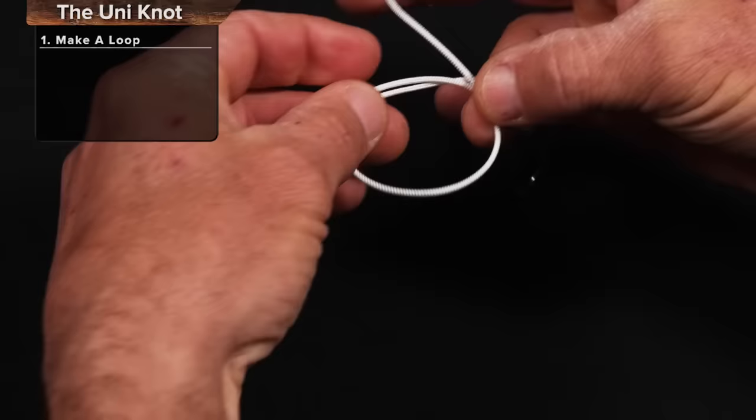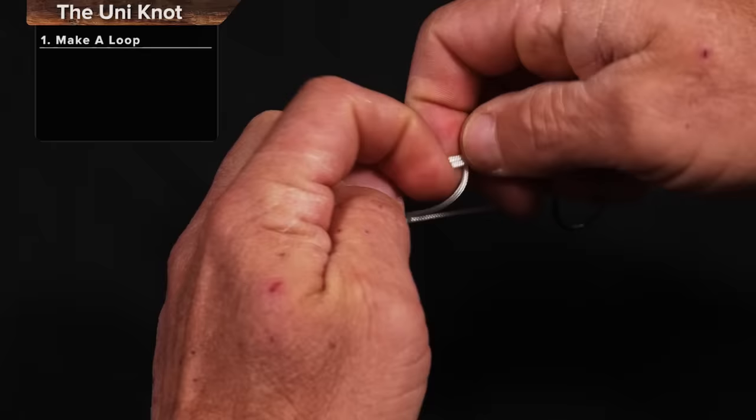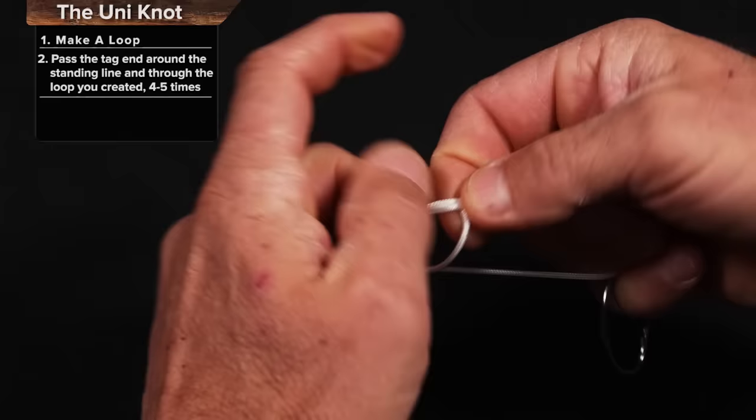Now, the easiest way to do it is to stretch this loop out just a little bit, and I'm going to wind the tag end one, two, three, four. We'll do it four in this deal, but a lot of times you'll do five or six with smaller line.